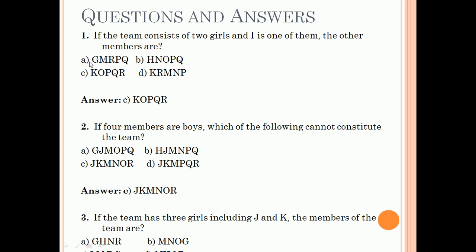So the options A and D are ruled out. Only B and C are there. Again option B is ruled out since H and N can never go along. So only option C is left, which is K or P, Q, R. So I would end here. Thank you.